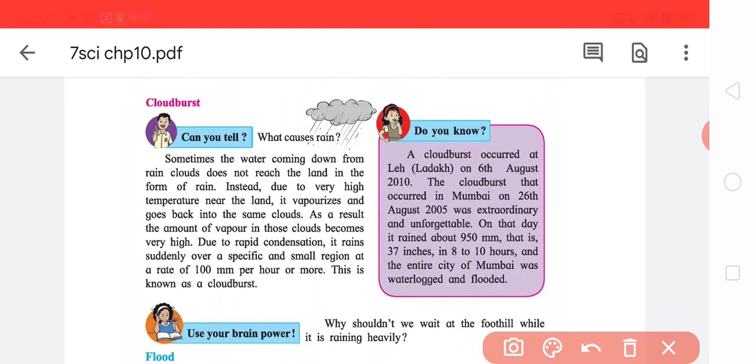Sometimes the water coming down from the red cloud does not reach the land in the form of rain. Instead, due to very high temperature near the land, it vaporizes and goes back into the clouds. Now, one I explained is a valid explanation where mountains are so tall that they can stop the clouds. In India, Vindhya Parvat or Aravalli hills are not at that much height to stop clouds. Only Himalaya has the height to stop the clouds.